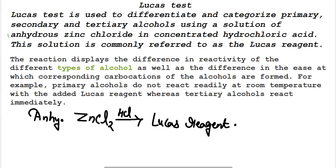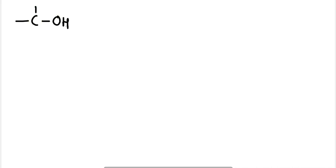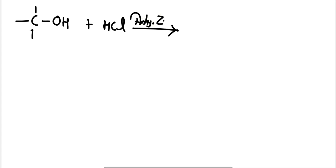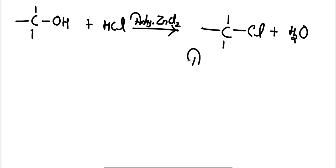The reaction here is: when alcohols are reacted with HCl in the presence of anhydrous ZnCl2 — that is Lucas reagent — formation of chloroalkane takes place and water is released. This alkyl chloride is insoluble in water and forms a cloudy solution.